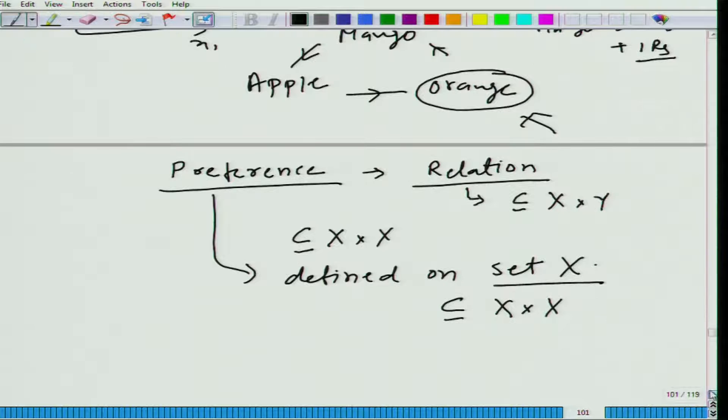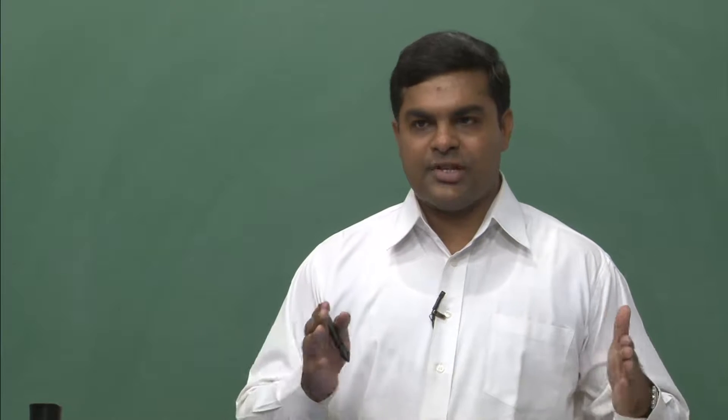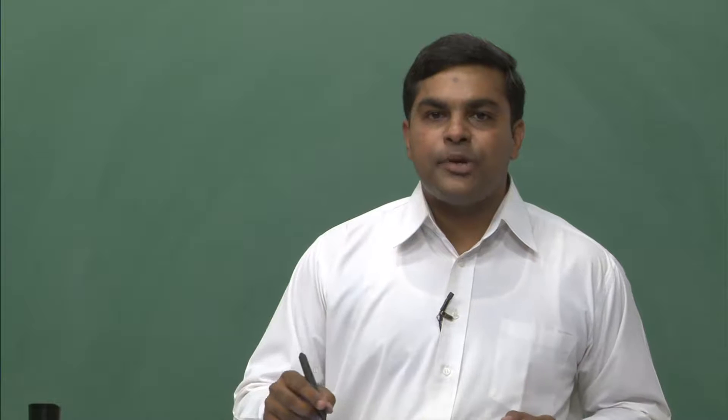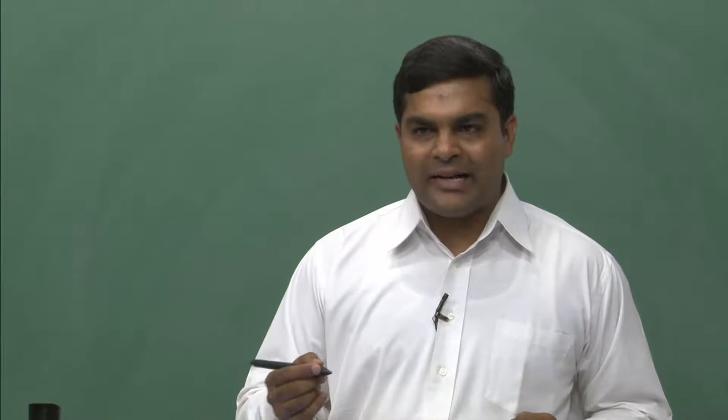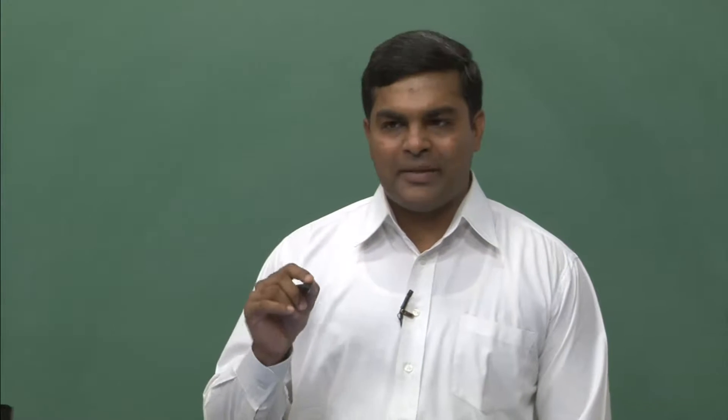Relations are very simple — like 'Mohan is a brother of Sohan.' Mohan is related to Sohan, or 'Romeo loves Juliet' — that is a relationship. We are trying to represent those relationships using mathematical notation. Here we are talking about preferences in terms of a particular mathematical relation — where an element of a set is related to the same or another element of the same set.